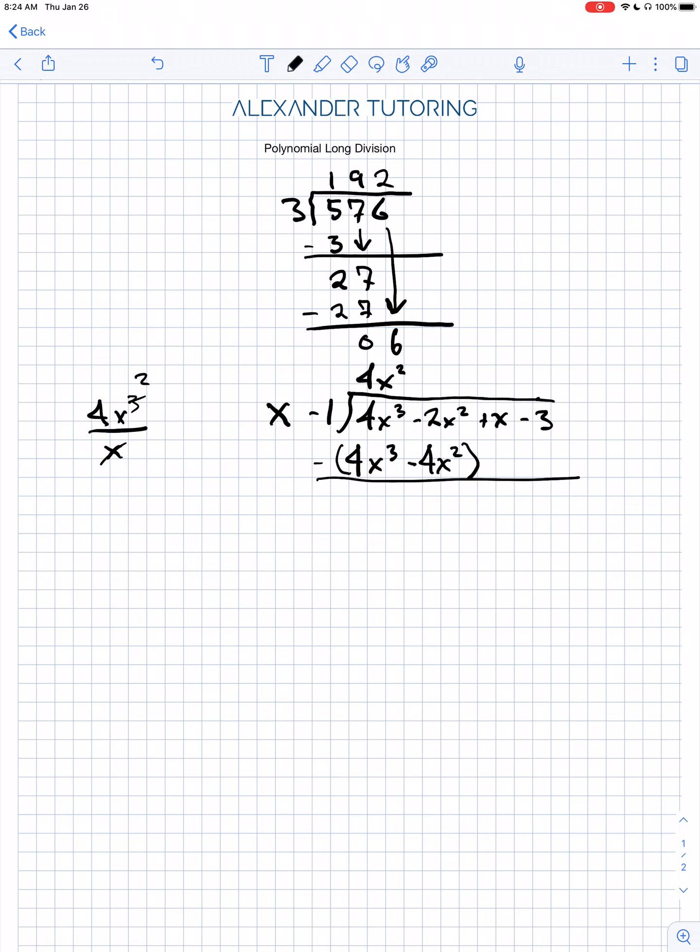so the first term, we have 4x cubed minus 4x cubed to get zero. That's always going to happen if you do it right. Now, here we have negative 2x squared minus minus is plus 4x squared, right, to get 2x squared.